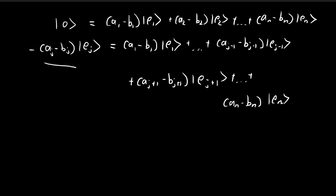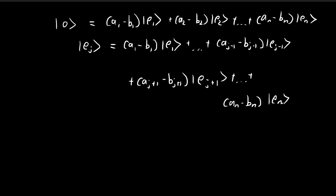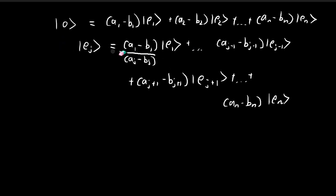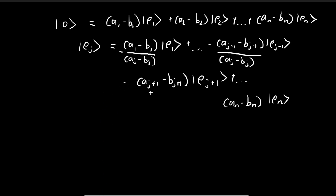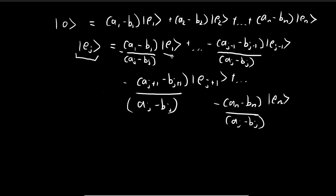The reason we chose the jth component is that aj is not equal to bj, meaning aj minus bj is not zero. This allows us to divide it over to the other side. Dividing aj minus bj to the other side — noting the negative sign — we get ej expressed as a linear combination of all the other vectors in the basis.